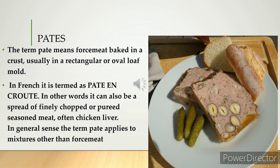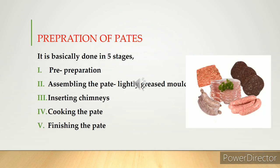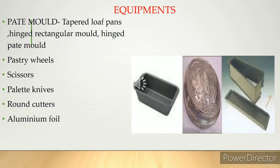Pâté is prepared inside a mold that is lined with dough, filled with force meat, covered, and chimneys are inserted. Cooking is done in two stages: the browning stage, where the surface is covered with foil and placed in a preheated oven at 475°C for around 10 minutes, then uncovered, lightly egg-washed, and returned to the oven until the internal temperature reaches 170°F.